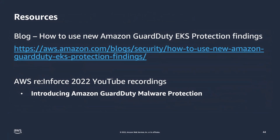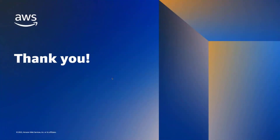To wrap up, here are a couple of resources for further learning. The first is a blog post specific to the Amazon GuardDuty EKS Kubernetes protection feature — a deeper dive into how to use findings to identify threats and remediate them. For the GuardDuty malware protection feature, recently launched at AWS re:Inforce, there's a YouTube recording introducing that feature and discussing how to use it for EC2 and container-based workloads. Thank you for your time — I hope this was helpful and I look forward to talking more about these features and services in the future.